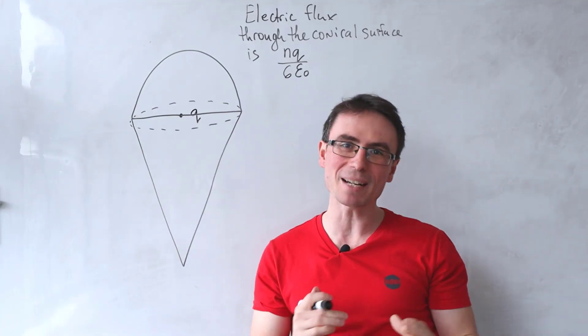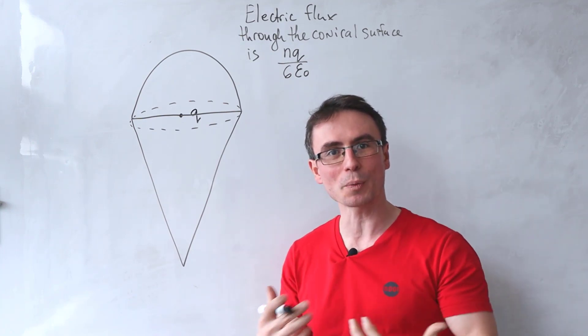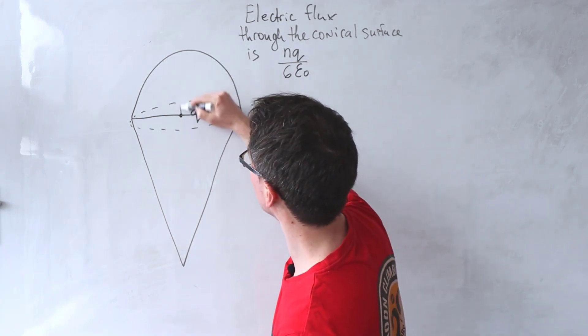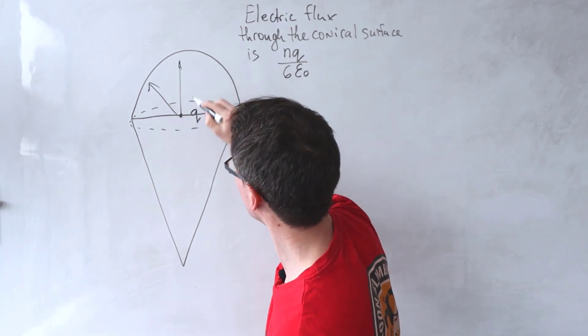But if we think about symmetry, what does the electric field around a point charge actually look like? Well it's radial like so.